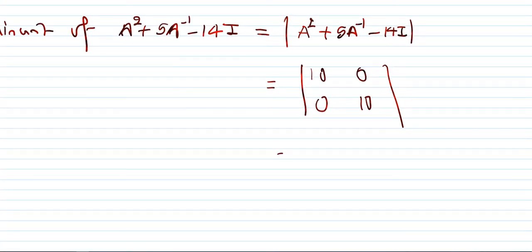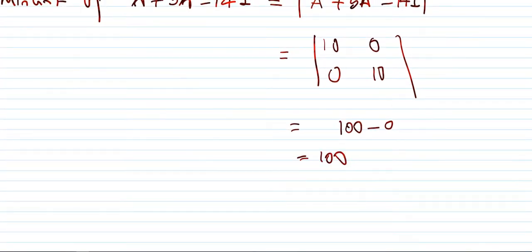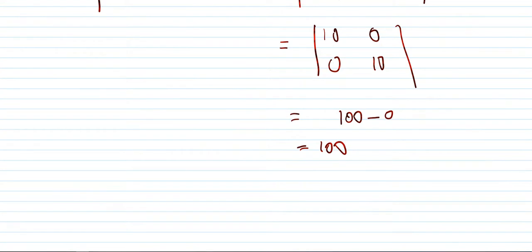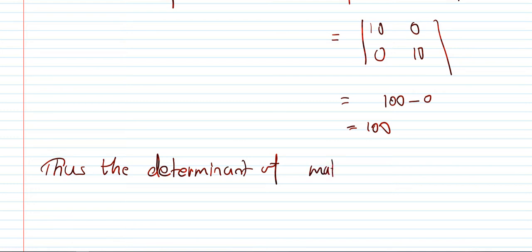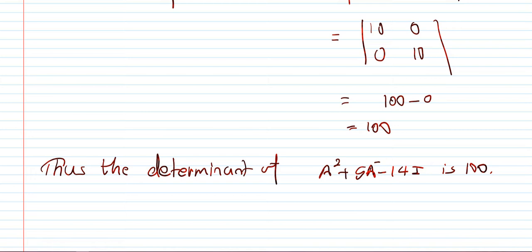Determinant of [[10, 0], [0, 10]] equals 100 minus 0 equals 100. So the required determinant of A squared plus 5A inverse minus 14I is 100. This was from 2063. Now I have another question from 2064.